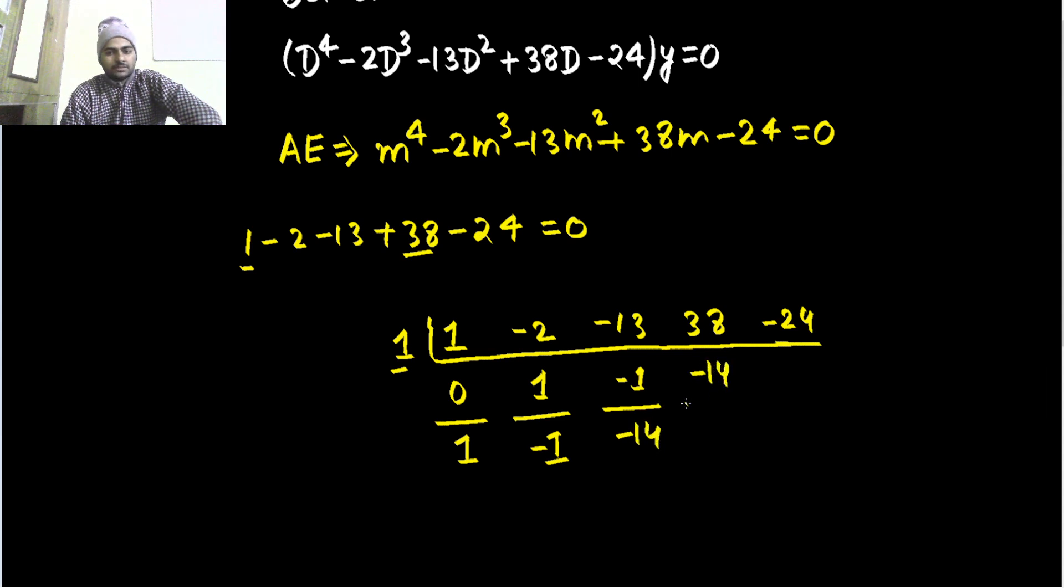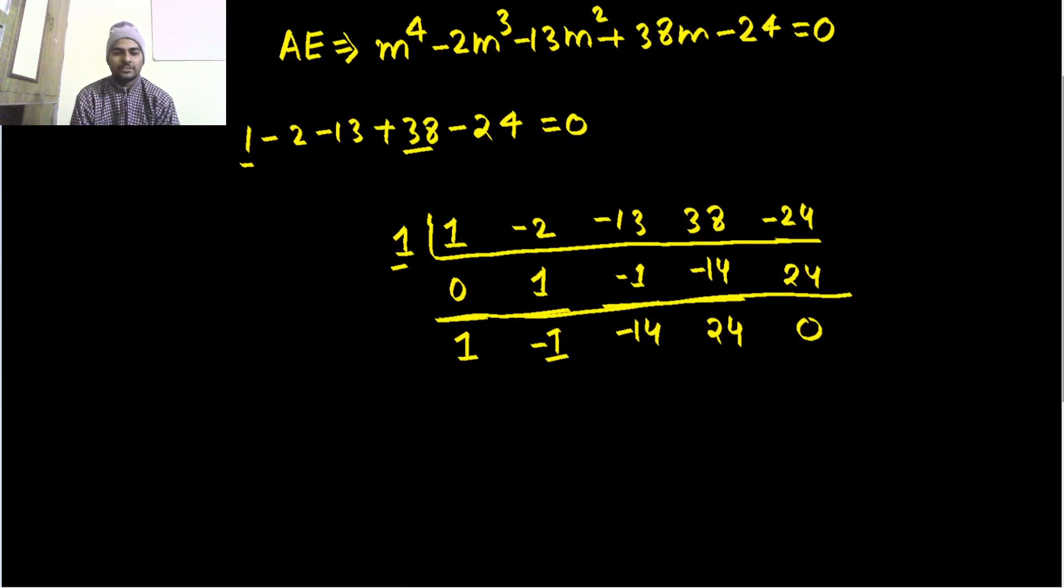Multiply again—you get 24. Finally you get 0 on addition, confirming that 1 is indeed a root. Now this has reduced from power 4 to power 3. The new equation is M^3 - M^2 - 14M + 24 = 0.